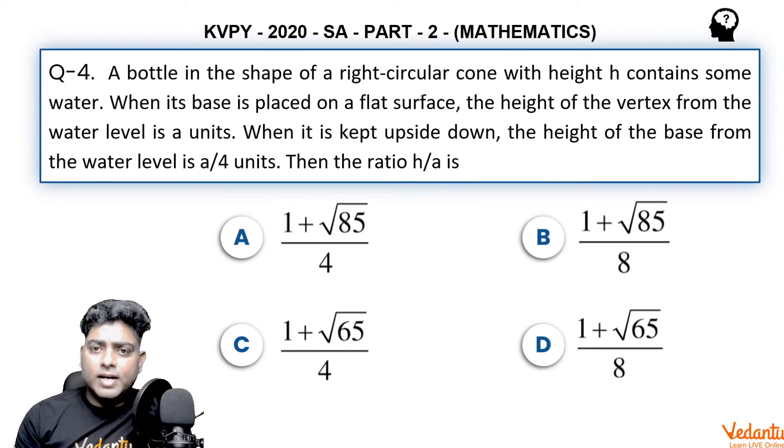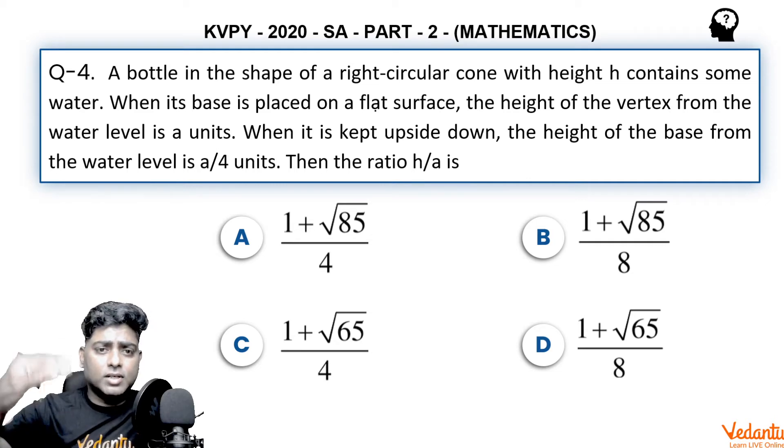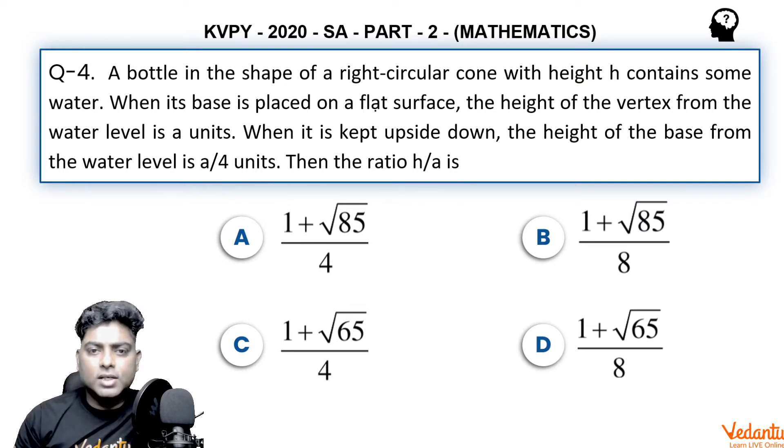A bottle is in the shape of a right circular cone with height h, contains some water. When its base is placed on a flat surface, the height of the vertex from the water level is a units. When it is kept upside down, the height of the base of the cone from the water level is a by 4 units. So we have to find the ratio h by a, the outer height of the cone, where a is defined in the manner in the question.